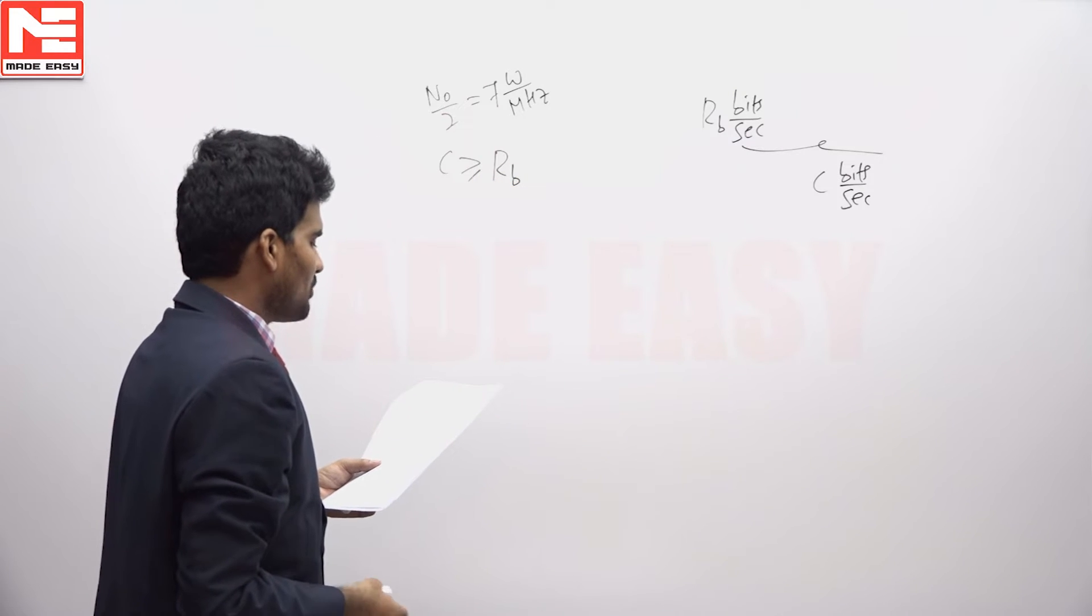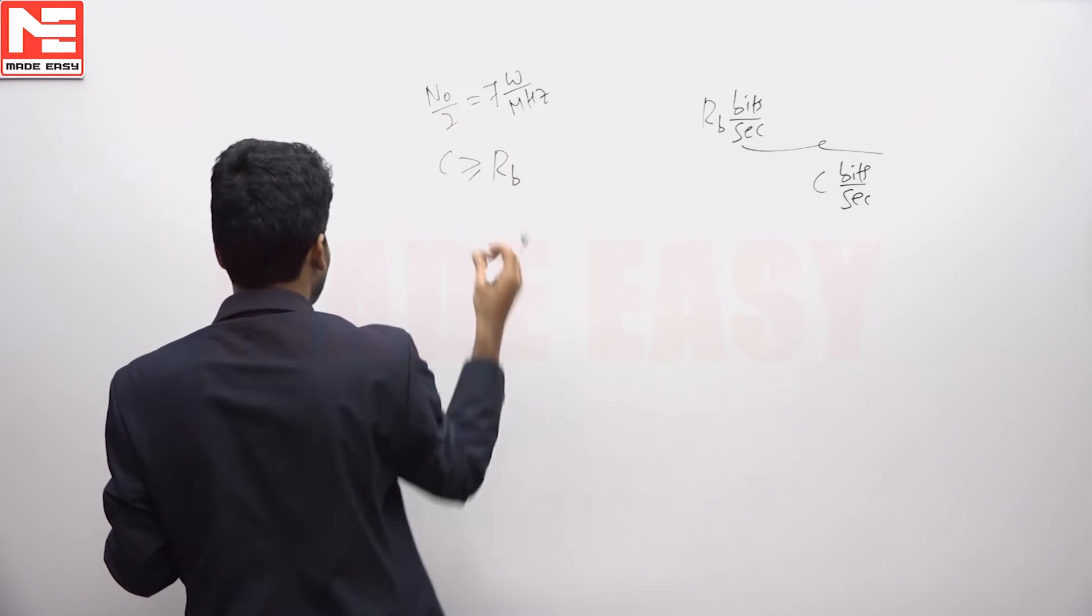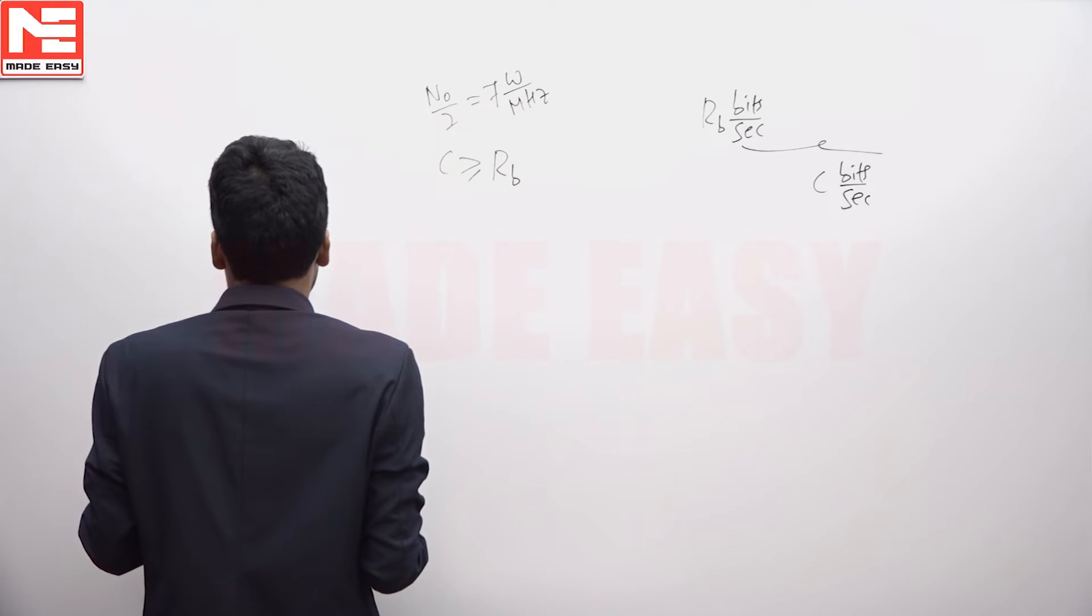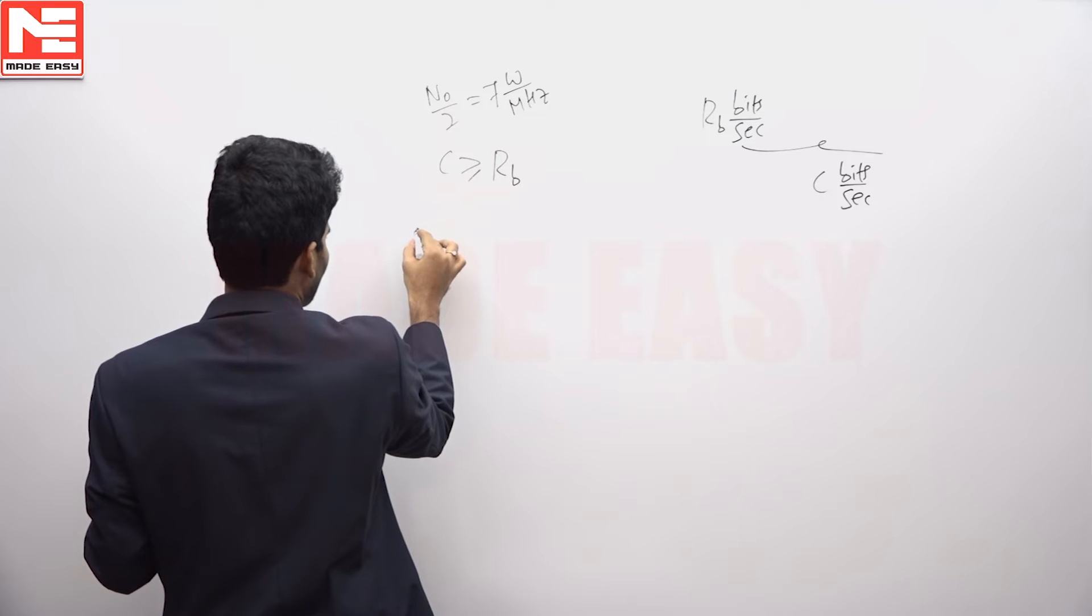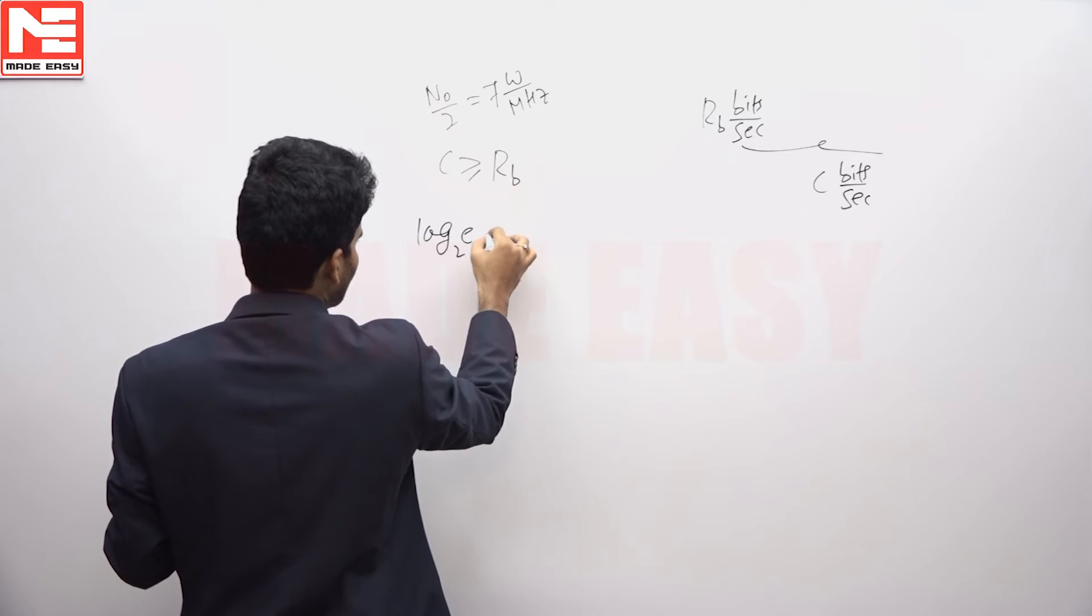And what is the minimum average bit energy required for this condition to be satisfied for error-free transmission? It is given infinite bandwidth, the signal is having infinite bandwidth, so the channel capacity will be log E base 2.